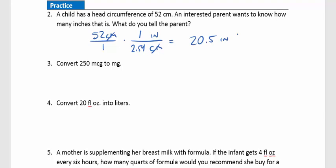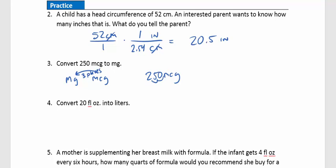Question 3: Convert 250 micrograms to milligrams. We're converting within the metric system, so we don't need fractions. Micrograms are smaller than milligrams — on our prefix chart, milligrams and micrograms are three decimal places apart. So we take 250 micrograms and move the decimal three places to the left. In 250, the decimal starts on the right, so moving it three places left gives us 0.25.